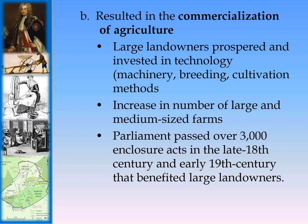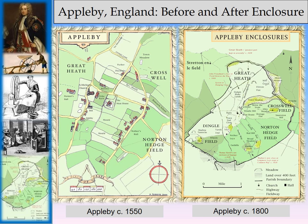Parliament in England passed over 3,000 enclosure acts in the late 18th and early 19th centuries that benefited large landowners. Those wealthy landowners were the ones participating in the electoral system — electing Parliament members to the House of Commons who passed laws benefiting them. Maps from Appleby, England show the open portions of fields before enclosure, and after enclosure where all land is brought under production.